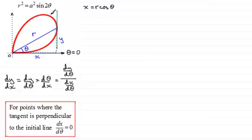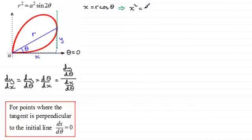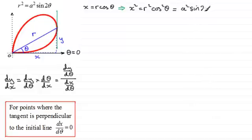That's why the equation x = r cos θ is fundamental to all these types of problems. Wherever you have r, you substitute it with what r equals from your polar curve equation. In this example, we've got r squared rather than just r, so I'm going to square both sides. That gives us x squared equals r squared times cos squared theta. Substituting for r squared, we get x squared equals a squared sine 2 theta multiplied by cos squared theta.